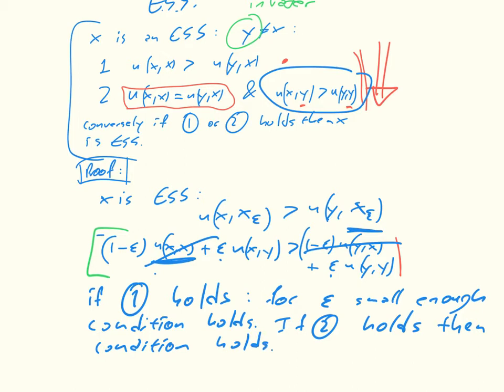So that's the proof going one way. That's proving that if we have this condition, then we have an ESS. Now what we're going to do is prove the other way. So what we're going to do is say, let's assume that the conditions don't hold, then we can't have an ESS. Okay, so we'll just go for the conversely part.